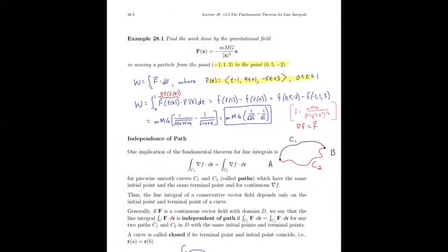To calculate the work done moving a particle from one point to a second point, the work is the line integral of the vector field F dotted with dr. We've determined the line segment connecting these two points — just to demonstrate we could — but it turns out we don't actually need it. In section 13.2 we would have had to parametrize r(t), expand everything, and integrate with respect to t. Thanks to the fundamental theorem for line integrals, we can skip all that.